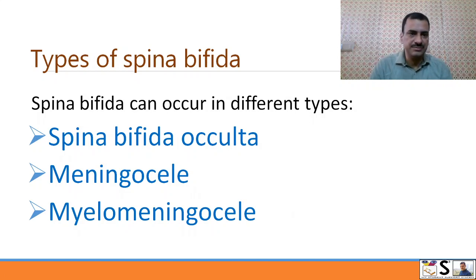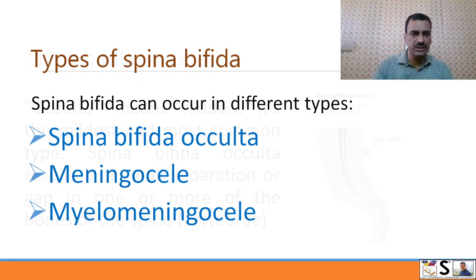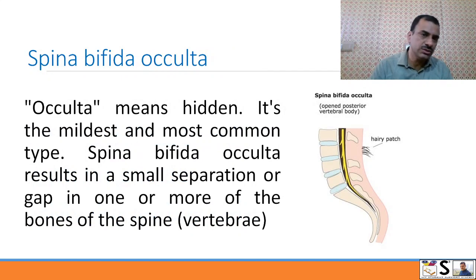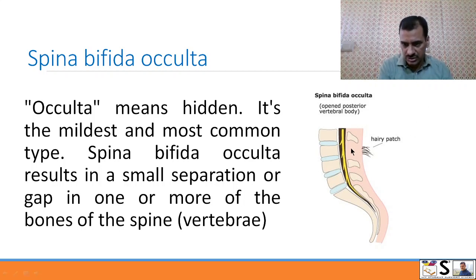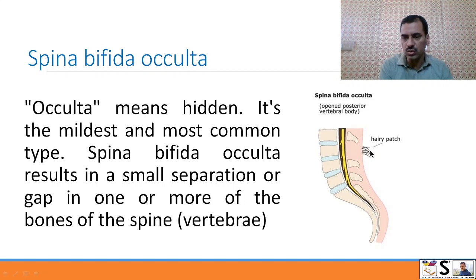Types of spina bifida: Spina bifida can be of three different types — spina bifida occulta, meningocele, and myelomeningocele. First, we will study spina bifida occulta. 'Occulta' means hidden. It is the mildest and most common type of spina bifida. It results in a small separation or gap in one or more of the bones of the vertebra. Normally, only a small depression or hairy patch is present.